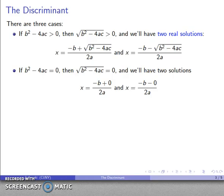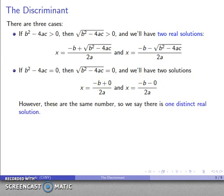If it's zero, then the square root is also going to be zero. And it'll have two solutions: negative b plus zero over 2a, negative b minus zero over 2a. Except these are the same number. When I add or subtract zero, I get the same thing.